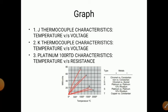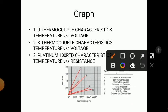Now we plot the graphs. First graph: J type thermocouple characteristics — temperature versus voltage. Second graph: K type thermocouple characteristics — temperature versus voltage. Third: platinum RTD characteristics — temperature versus resistance. The RTD used here is a platinum-100 RTD, meaning the platinum wire has an original resistance of 100 ohms. The graphs are shown here — check them.